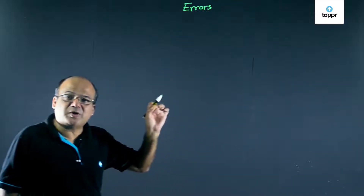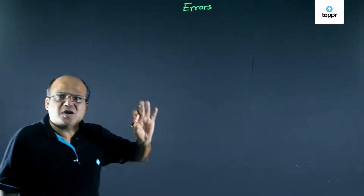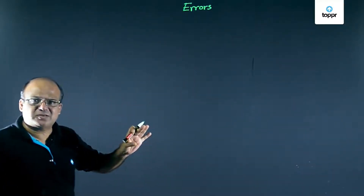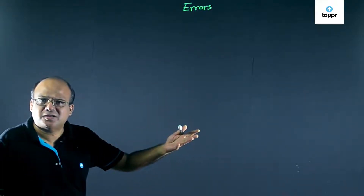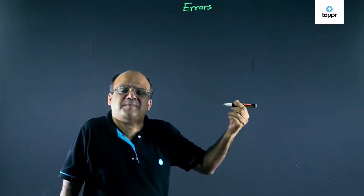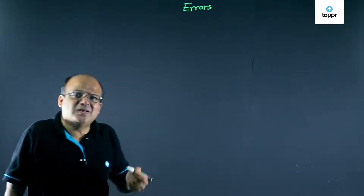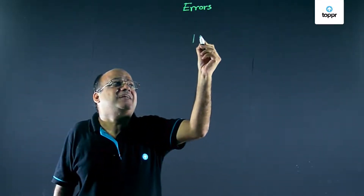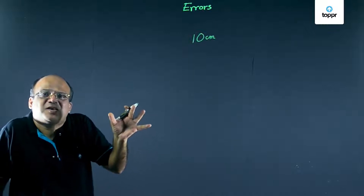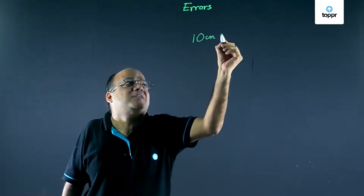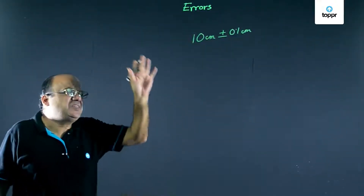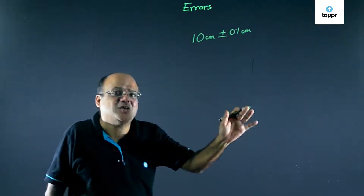In this video, we are going to talk about errors. No measurement is exact. Every measurement has some uncertainty, which we call errors. For example, if we measure the length of this pen, then we can write the length as 10 centimetres. But this may not be the exact length of the pen — it may have some plus-minus value, like 10 centimetres plus-minus 0.1 centimetres. So this uncertainty we call errors.